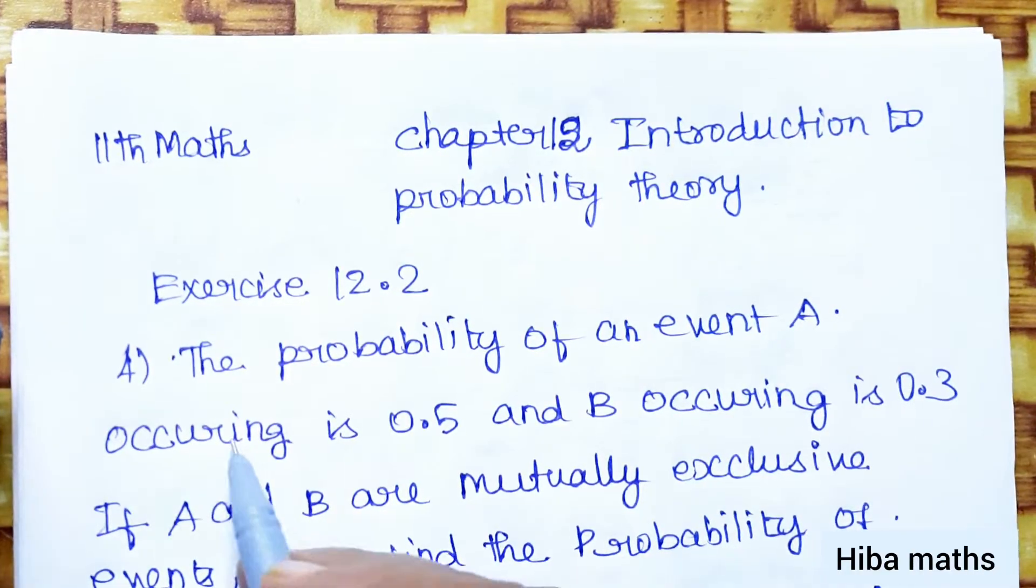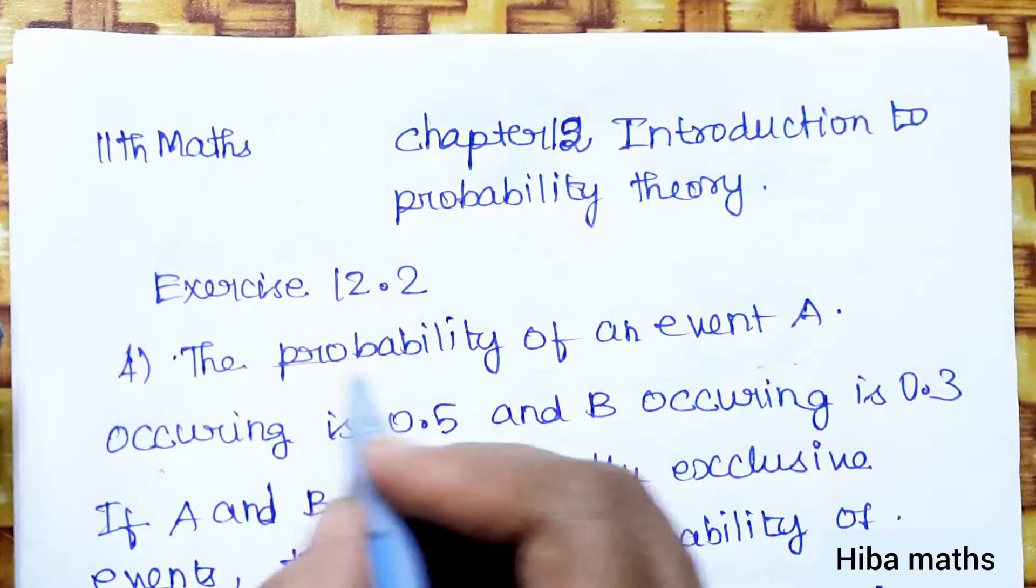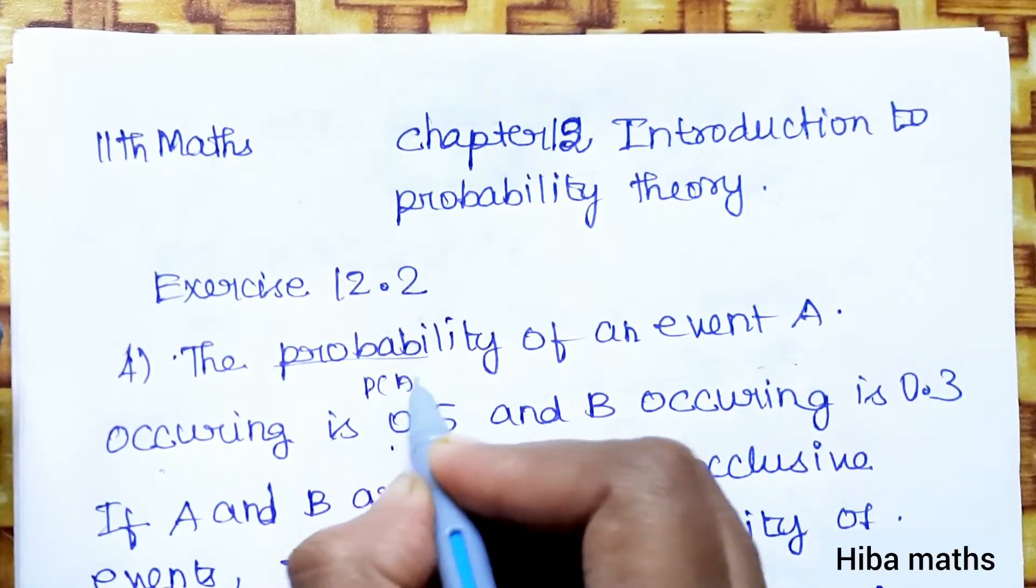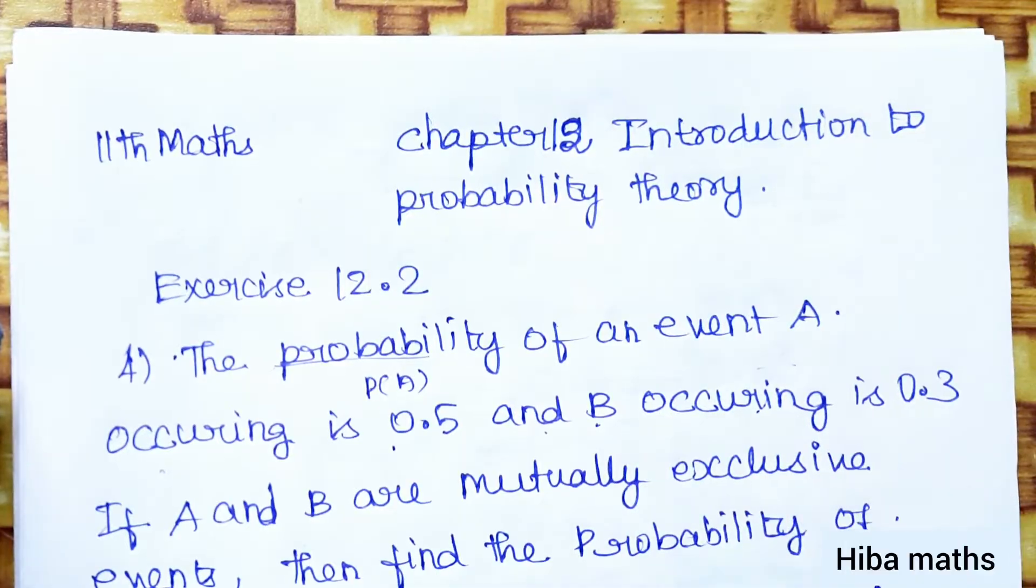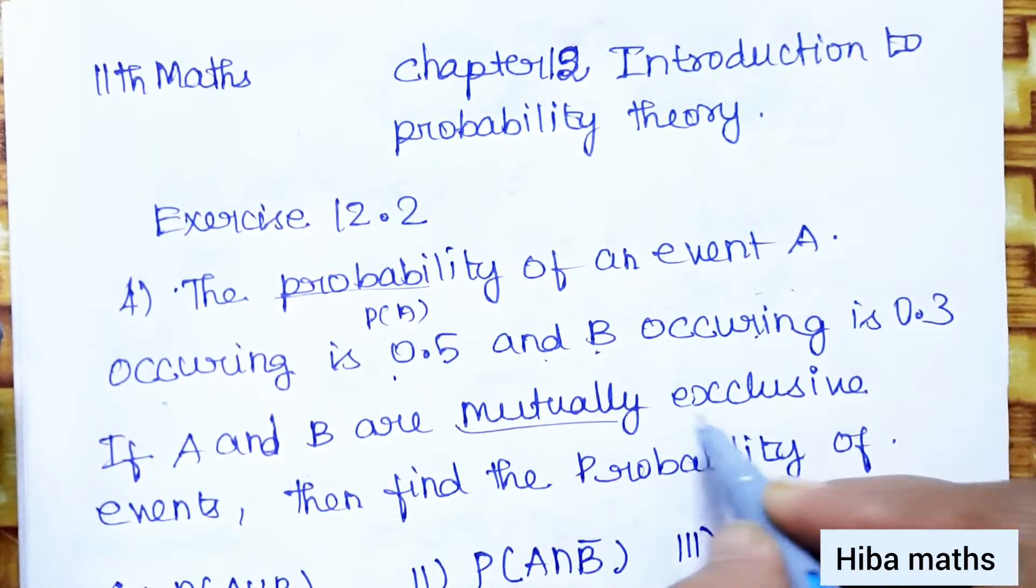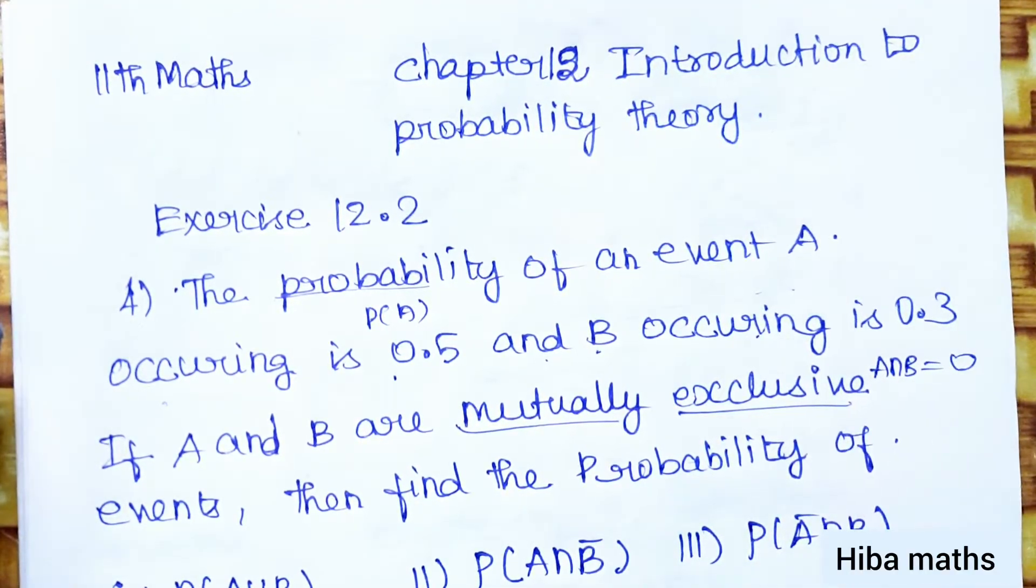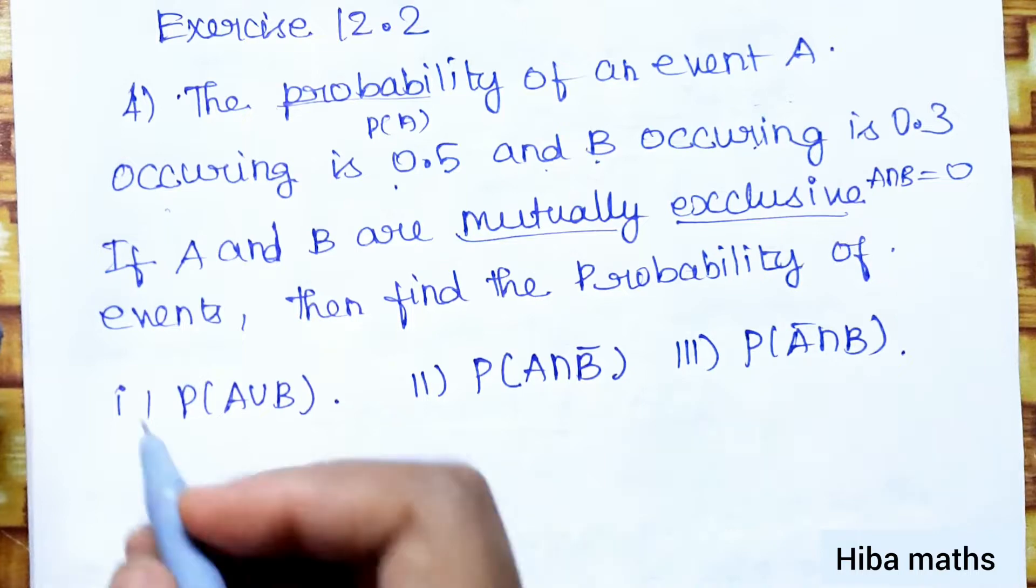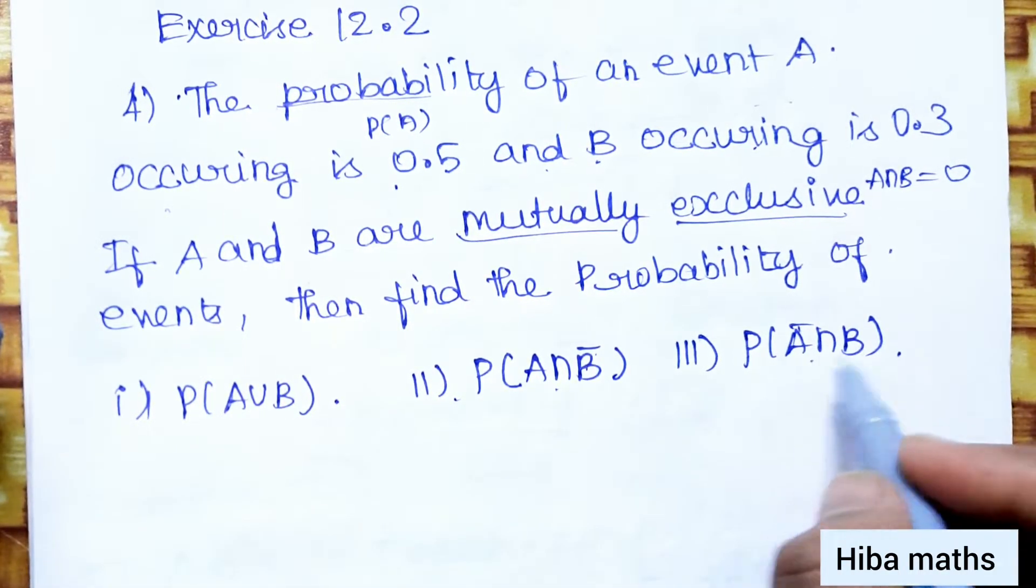The probability of an event A occurring is 0.5, probability of B occurring is 0.3. If A and B are mutually exclusive events, then A intersection B would have value 0. Find the probability of P(A∪B), P(A∩B̄), and P(Ā∩B).